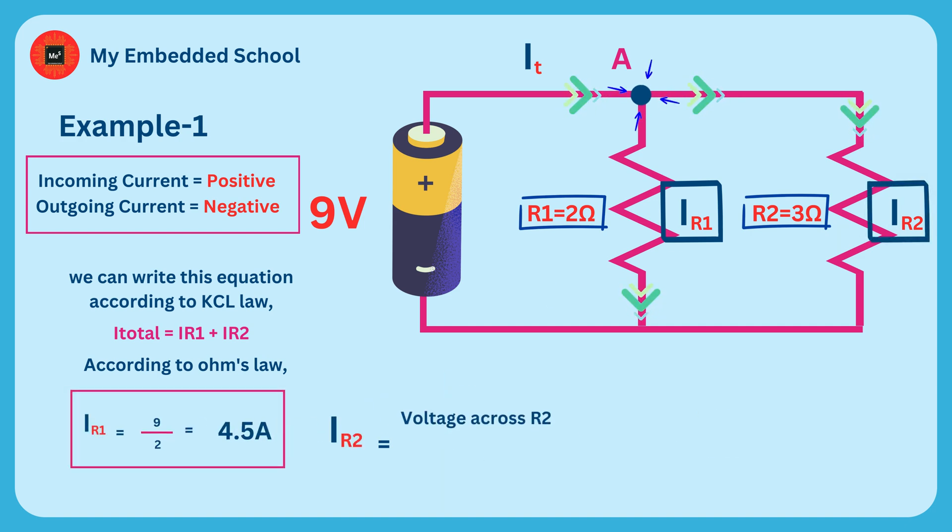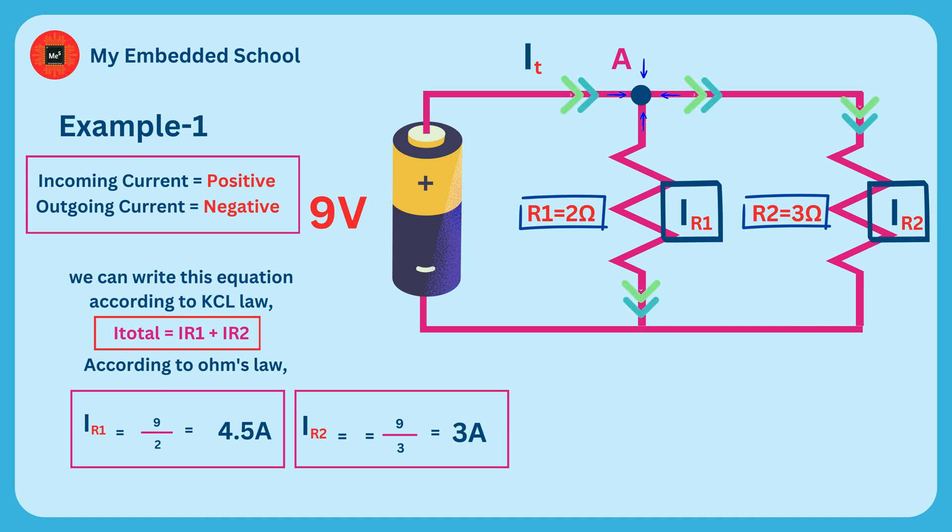IR2 is equal to voltage across R2 divided by R2. By using this equation, we find IR2 equals 3 amperes from 9 volts divided by 3 ohms from this operation. I total equals IR1 plus IR2. So total current flowing through this circuit is I total equals 7.5 amperes.